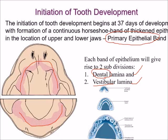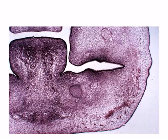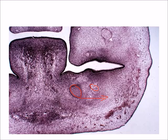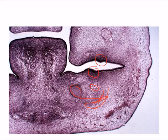Here is a decalcified section of an embryo at the age of six weeks. We can see Meckel's cartilage and the neurovascular bundle. Bone appears in the lower jaw at the seventh week intrauterine life, lateral to Meckel's cartilage. Since bone is not visible in this section, it is taken from a six-week embryo. In both the lower and upper jaw we can see the thickening of the ectoderm, with condensation of mesenchyme tissue below it — this is the primary epithelial band.